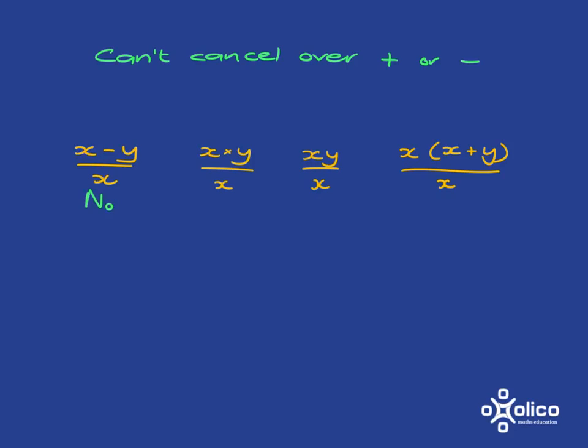This next one, no problem at all. You can cancel the x's because you've got multiplication at the top. This next one over here, again, no problem because what you've got at the top is, in fact, x times y. So we can cancel.